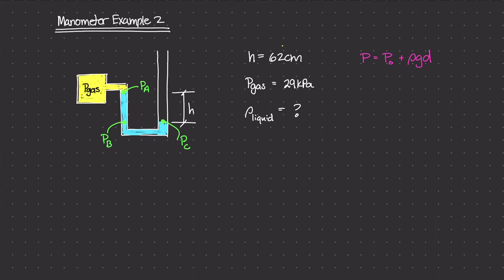What do we know about this problem? Well, we know that the gas pressure is 29 kilopascals, so pressure A is equal to the pressure of the gas: 29 kilopascals. At point C, the liquid is open to the atmosphere, so P sub C is equal to atmospheric pressure, which is 1 atm, equal to 101.3 kilopascals.